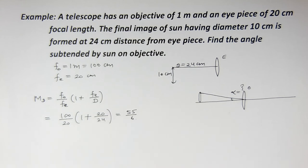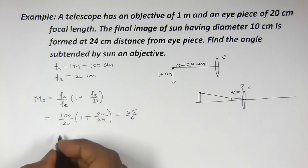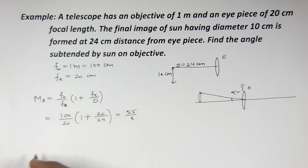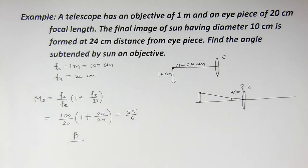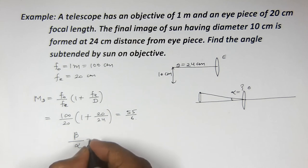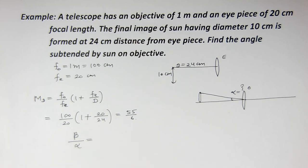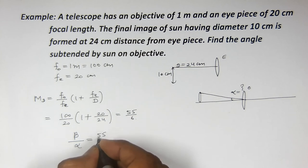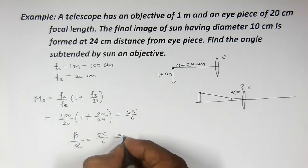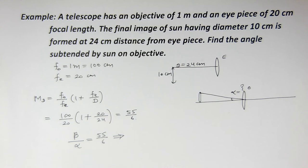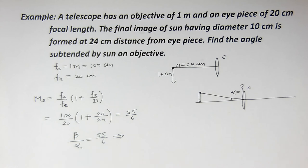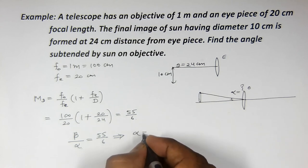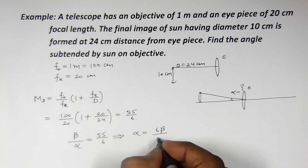To yeh to magnifying power aa gayi. Ab yeh magnifying power jo hoti hai bacchon, yeh hoti hai beta upon alpha — jahan par beta hota hai wo angle jo final image ne banaya hota hai eye-piece par, aur alpha hota hai wo angle jo object ne banaya hota hai objective par. To beta upon alpha = 55 upon 6, aur humein find karna hai alpha ki value. To alpha = 6 beta upon 55.